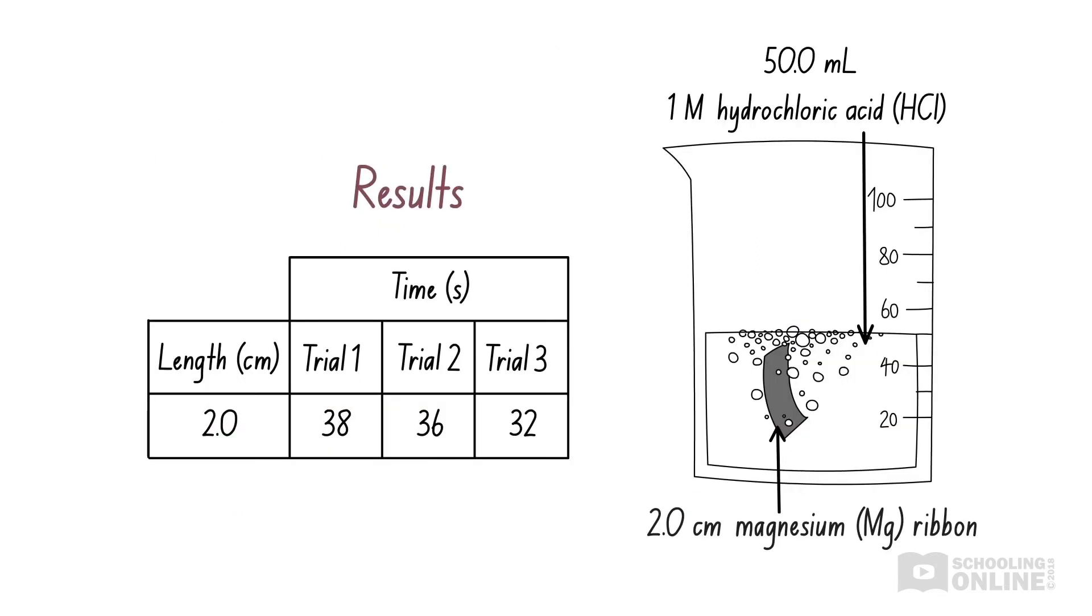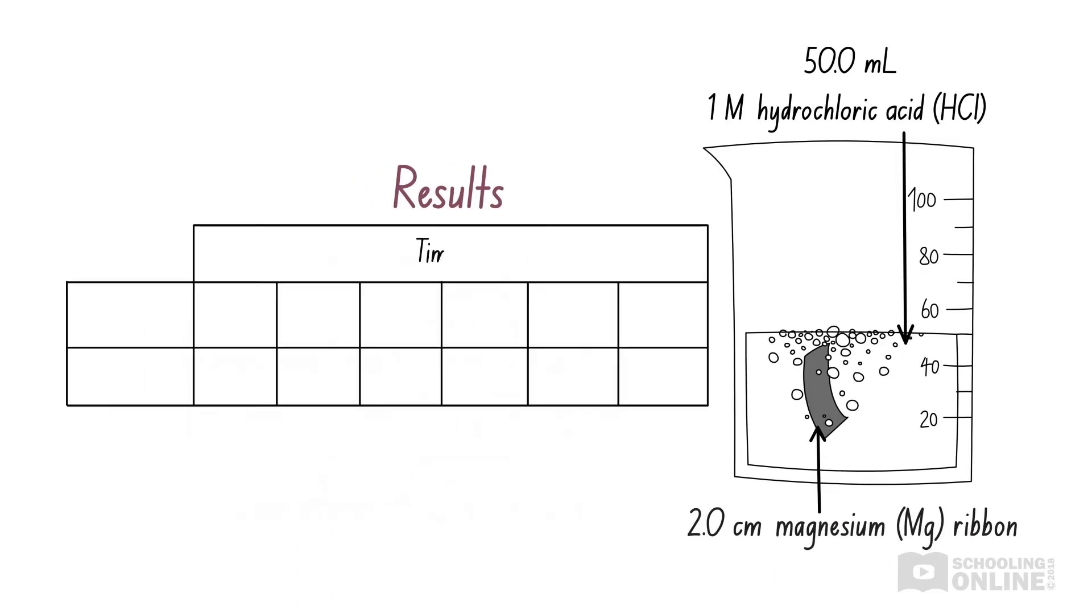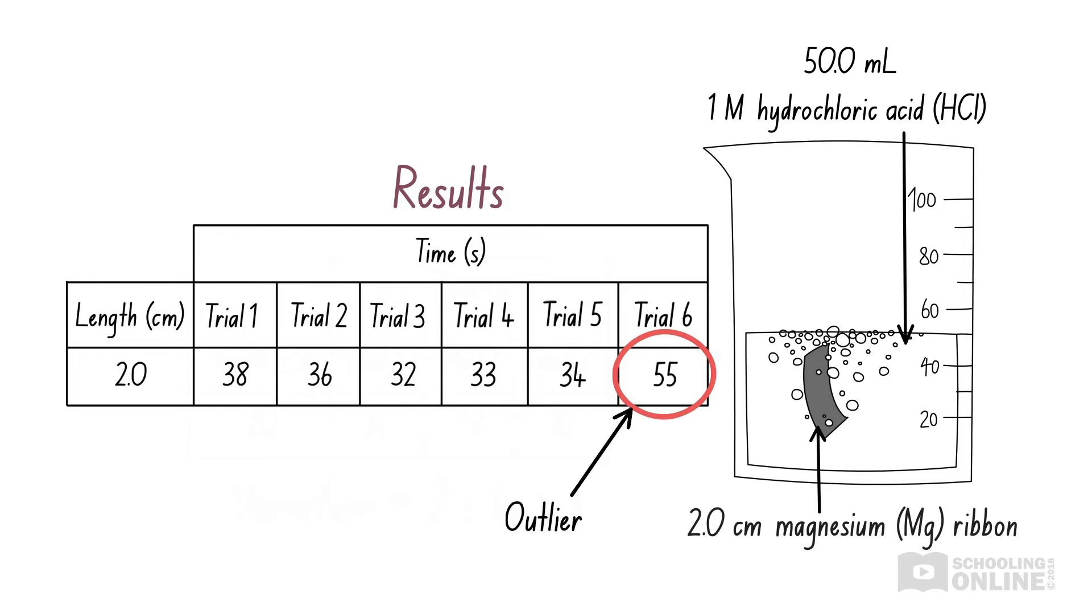Let's go back to the experiment where we measured the time taken for magnesium to react with hydrochloric acid. The results that we've collected show a fair amount of variation, differing from two to six seconds. Since the first three results weren't very reliable, we repeat the experiment another three times. But for some reason, the last measurement is completely out. If we compare it to the other results, we can easily conclude that it's an outlier because it's much larger than all the others.